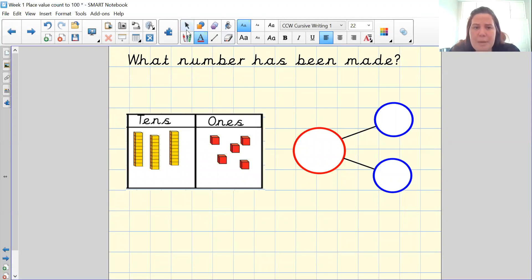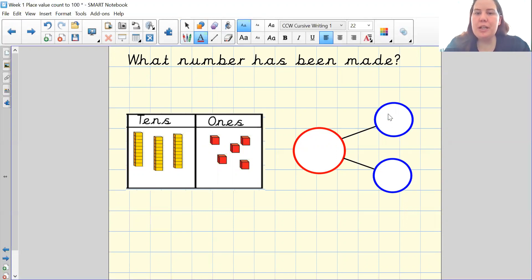So yesterday we focused on making this diagram. So we made numbers using tens and ones. Today what I'm going to do is I'm going to change it by putting numbers into the boxes for us. So if I have three tens, one, two, three, how much does that represent?